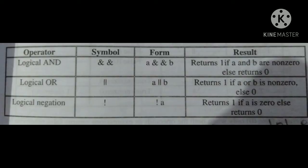The logical operators table uses four columns: operator, symbol, form, and result. Logical AND symbol is two ampersands (&&). Form: A && B — returns 1 if both A and B are non-zero, else returns 0.